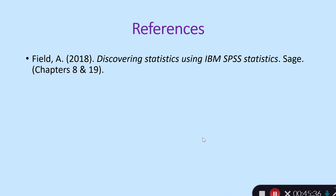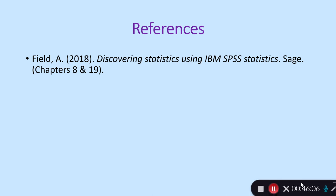That's all I'm going to cover today. The reference is Andy Field's textbook — chapters 8 and 19 on the most recent version. Chapter 19 covers categorical data and chi-square, but also log-linear analysis, so just focus on the chi-square sections. Hopefully that was useful. I've managed to fit everything in within the hour, and I'll see you in the class and lab classes soon.